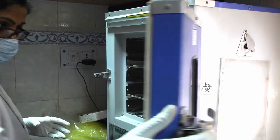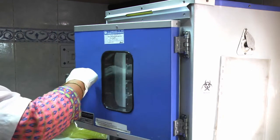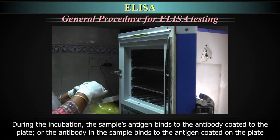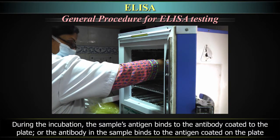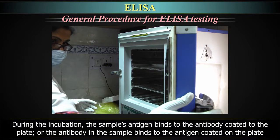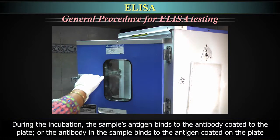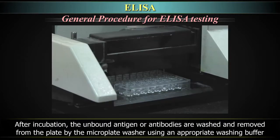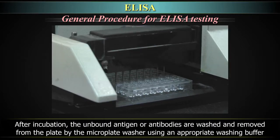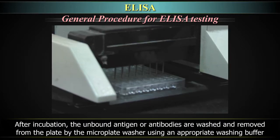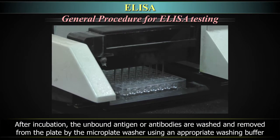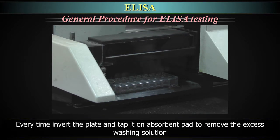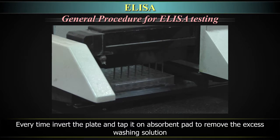Cover the wells with strip sealers and black cover and incubate at temperatures ranging between room temperature and 37 degrees Celsius for a determined period of time according to the test requirement. During the incubation, the sample's antigen binds to the antibody coated to the plate, or the antibody in the sample binds to the antigen coated on the plate. After incubation, the unbound antigen or antibodies are washed and removed from the plate by the microplate washer using an appropriate washing buffer. Every time, invert the plate and tap it on an absorbent pad to remove the excess washing solution.